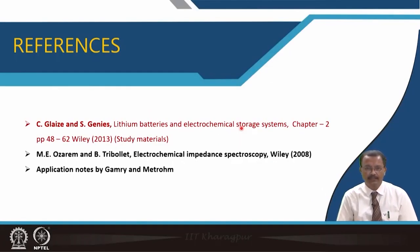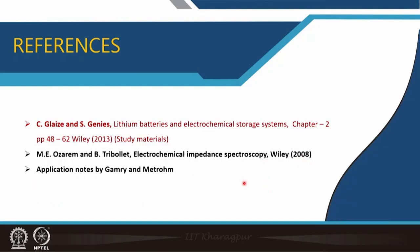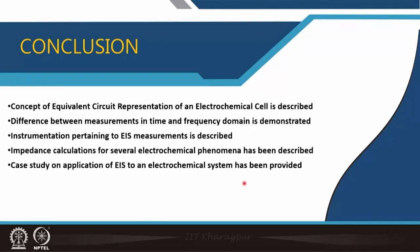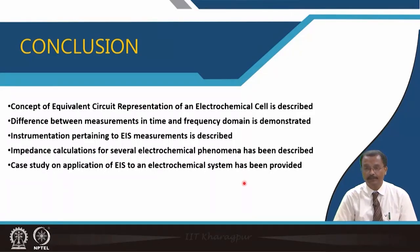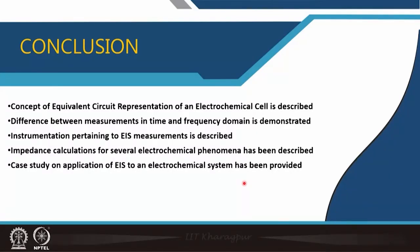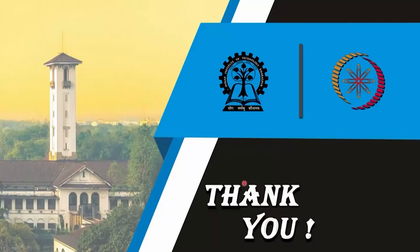For further study, the reference book on electrochemical impedance spectroscopy by Orazem is recommended, along with application notes from Gamry and Metrohm on their websites. In summary, this lecture covered: the concept of equivalent circuit representation of an electrochemical cell, the difference between time and frequency domain measurements, instrumentation pertinent to EIS measurement, impedance calculations for several electrochemical phenomena, and a case study on application of EIS to an electrochemical system. Thank you for your attention.